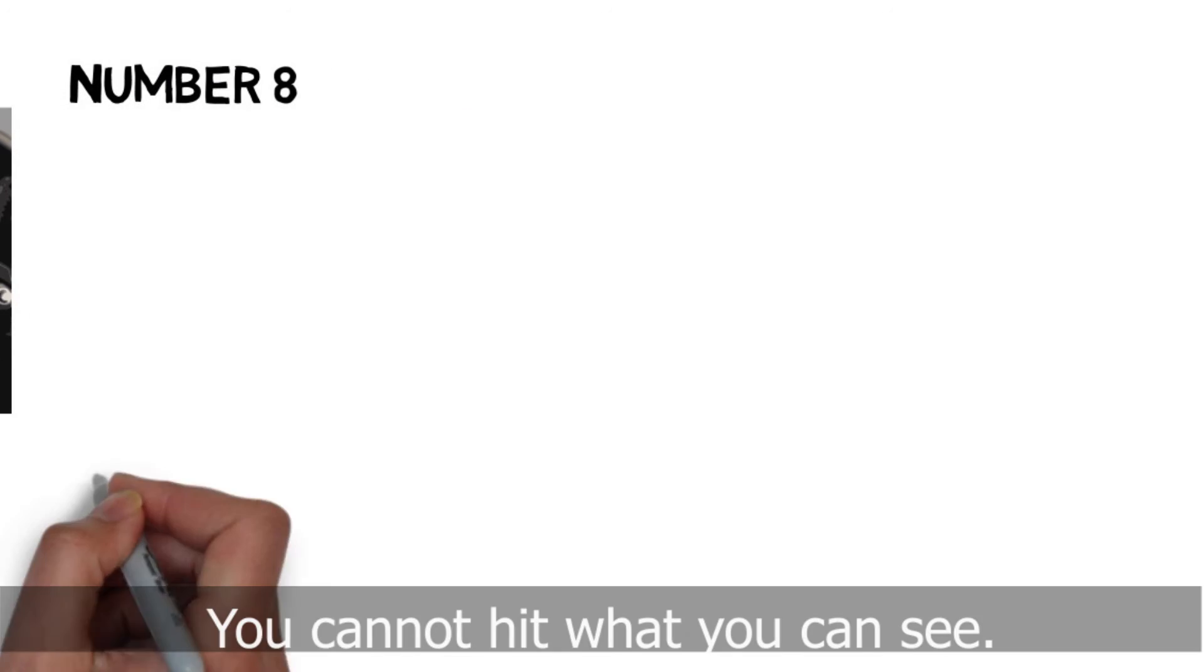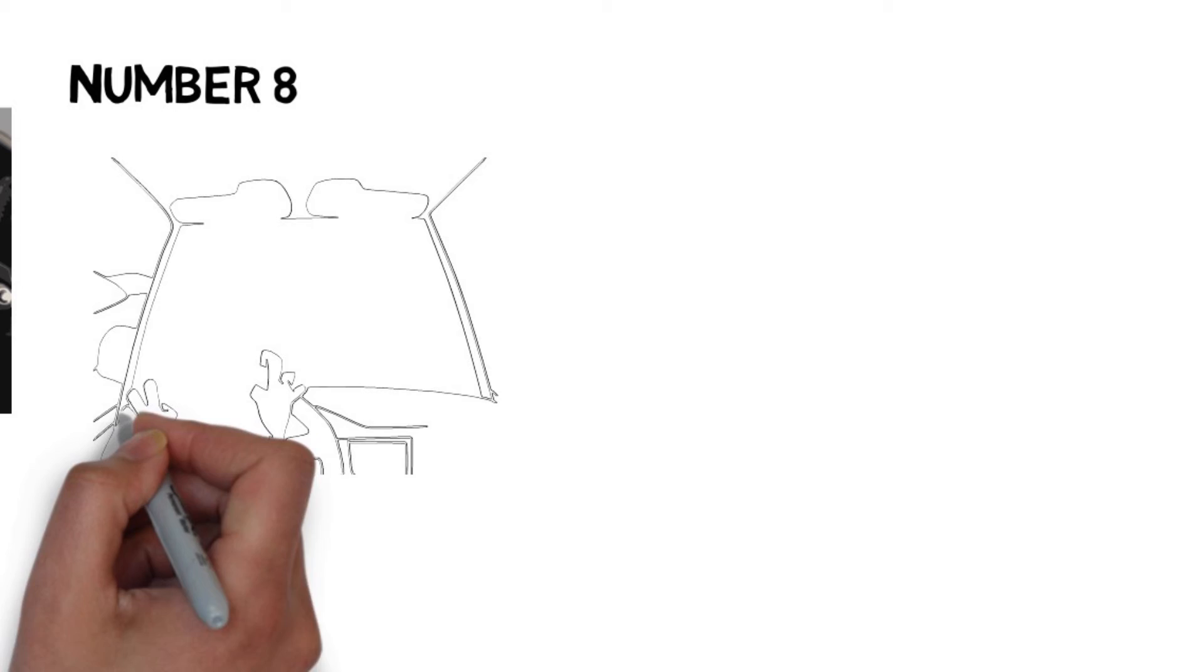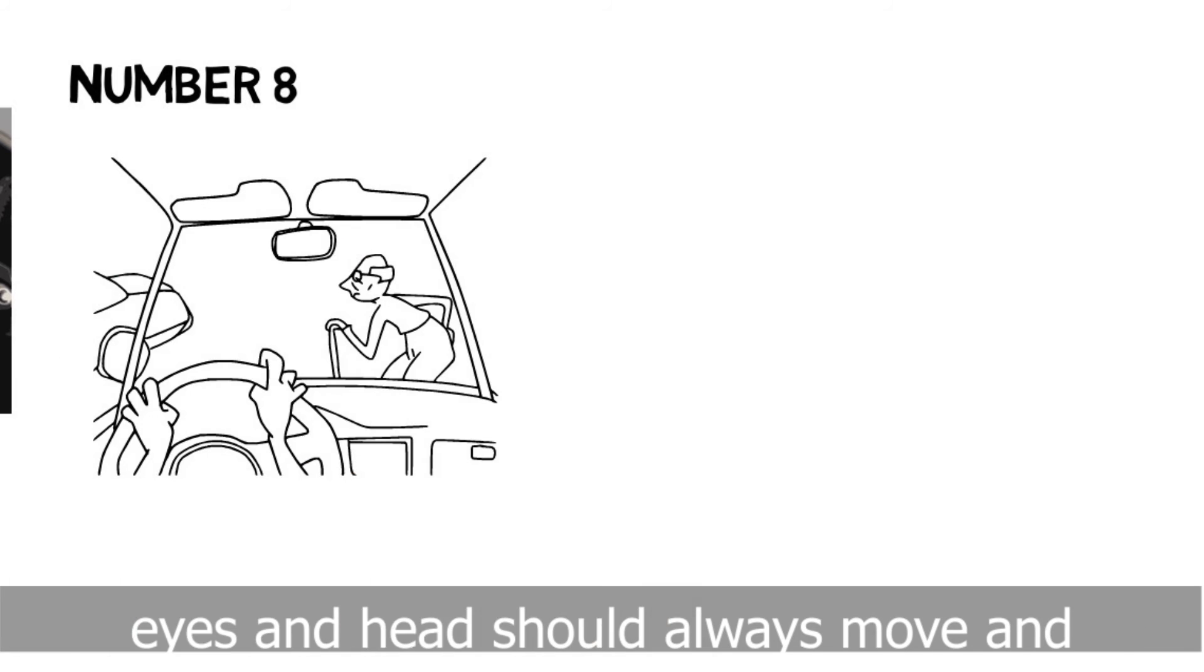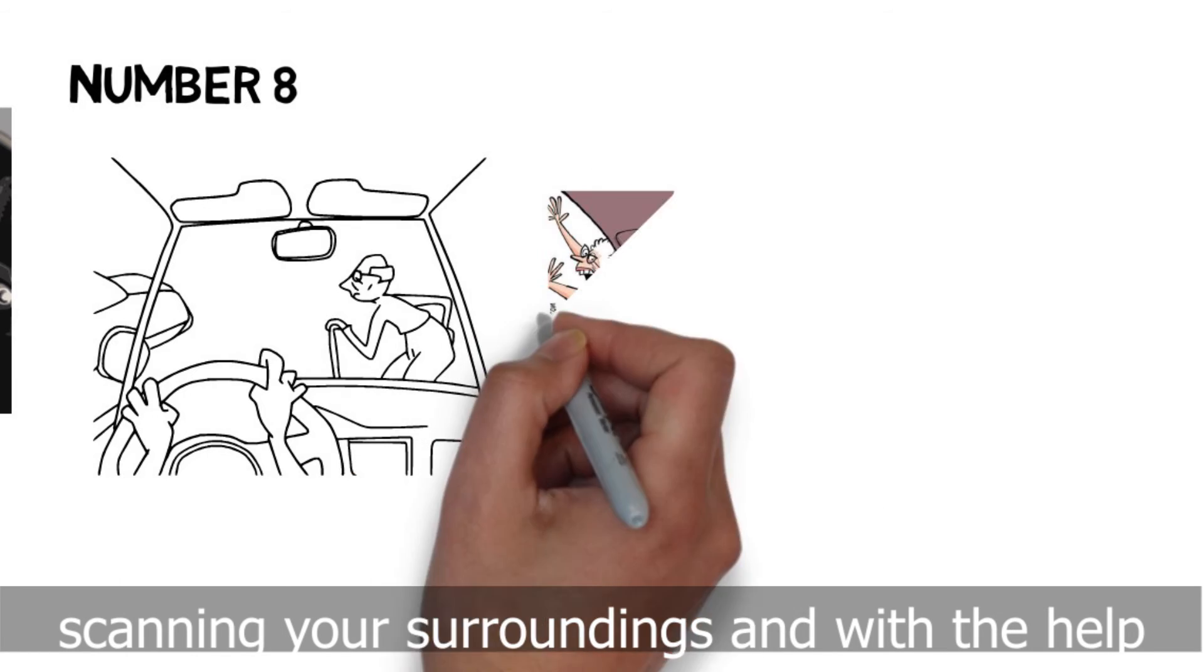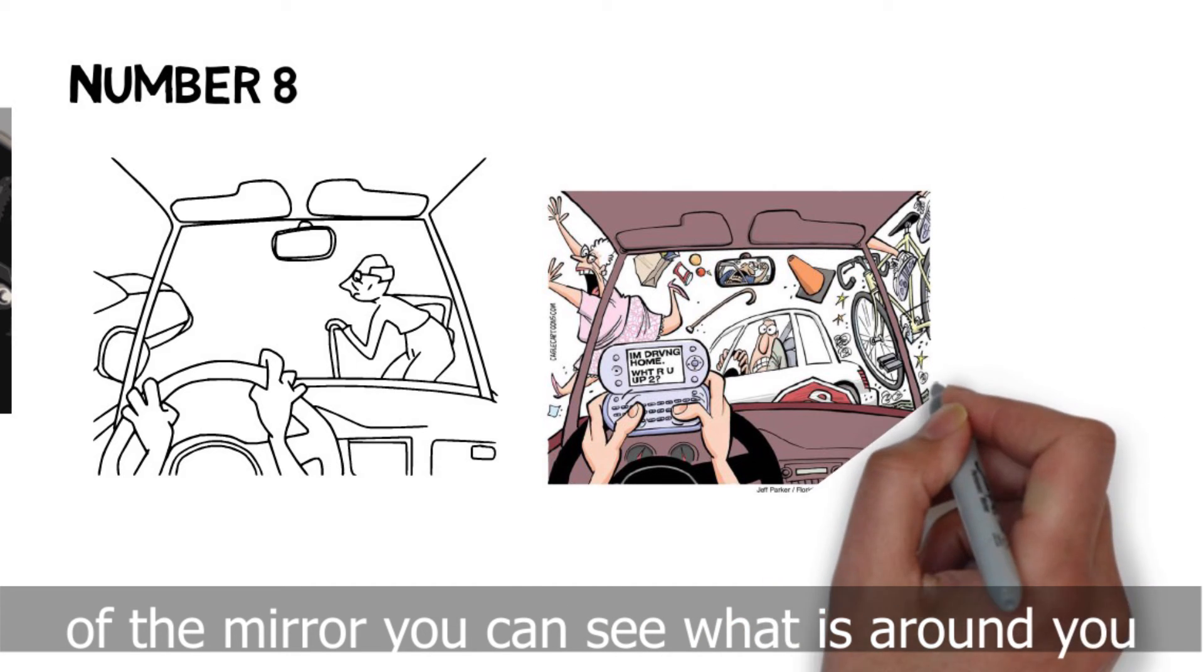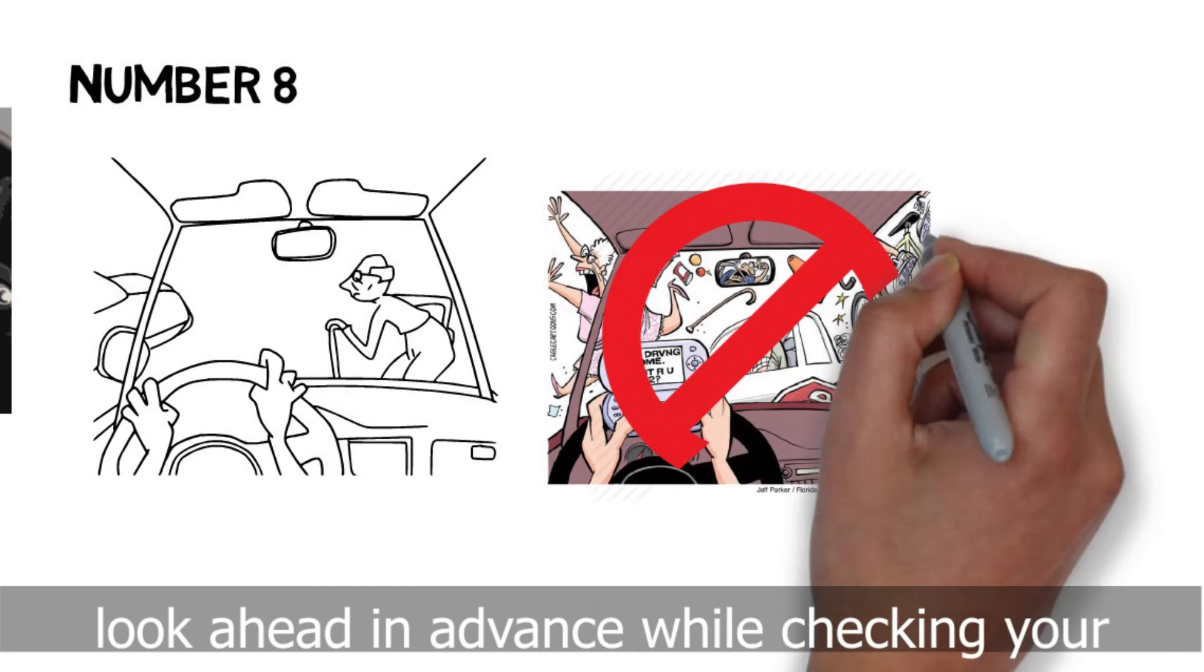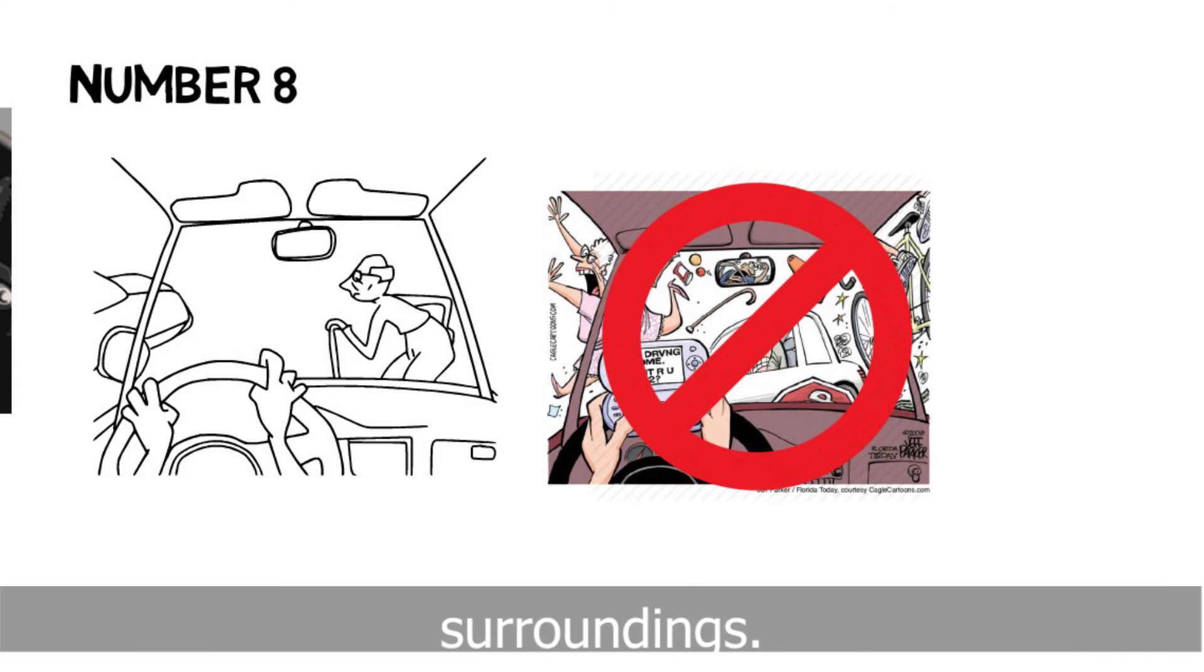Number 8. You cannot hit what you can see. Always remember that when you're driving, your eyes and head should always move and scan your surroundings. And with the help of the mirror, you can see what is around you. And the faster the car, the further you must look ahead in advance while checking your surroundings.